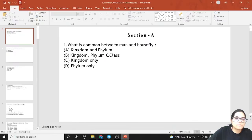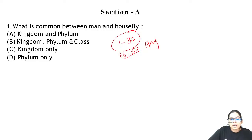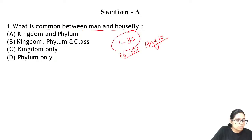Let's start today's session. Question number one, Section A: what is common between man and housefly? Man and housefly — both belong to Kingdom Animalia. This is the same. But the phylum changes — man is different. So that is the answer for question one.